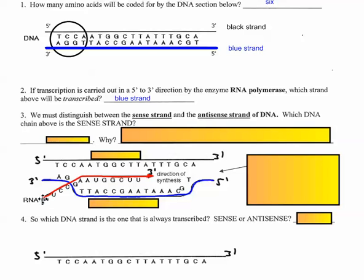We're moving to the right and using this blue strand to create a complementary sequence. Notice: the sequence of bases here is not the same as the sequence on the black strand above, because we're using the blue strand as our template. But look at the black strand above — the letters here are actually spelling out the exact same instructions as the red mRNA molecule. The red mRNA strand resembles the black one. So the black strand is called the sense strand, and the blue strand is called the antisense strand.